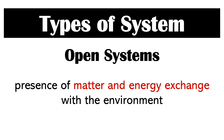Systems could either be classified as an open system or a closed system. If matter and energy exchange is present in a system, then it is called an open system.